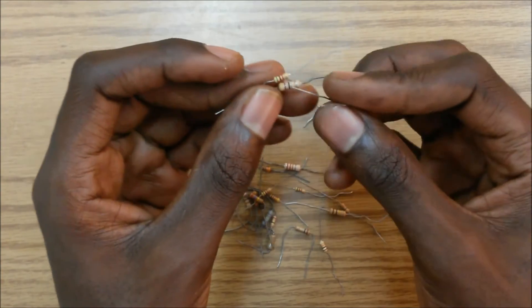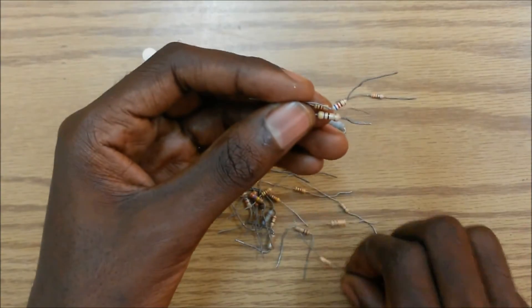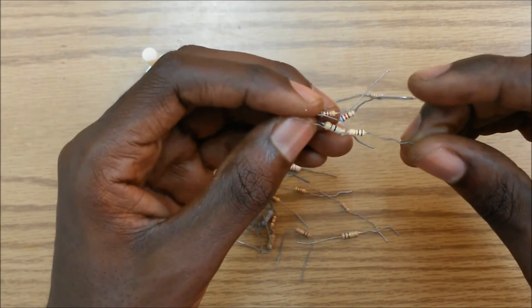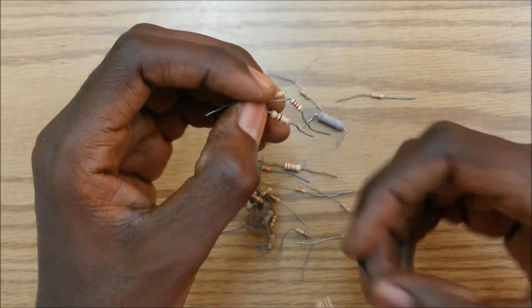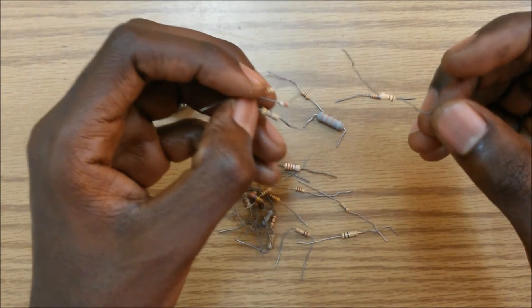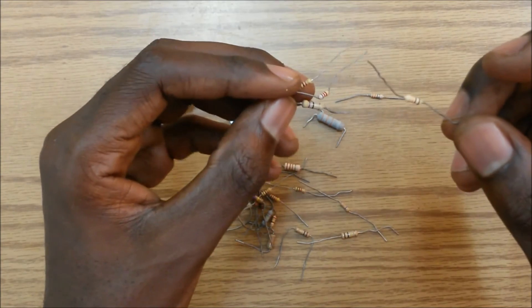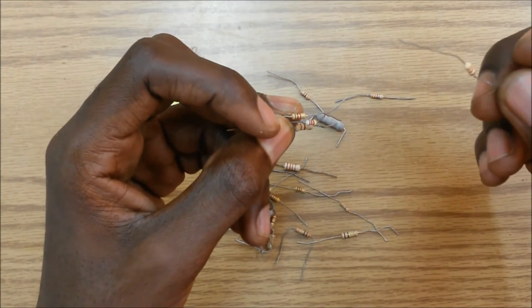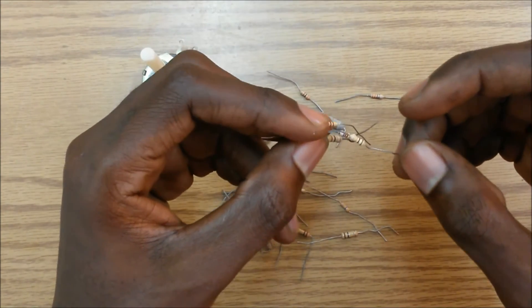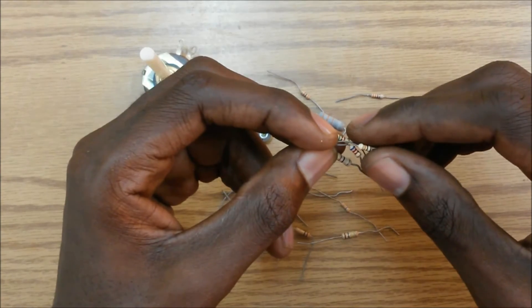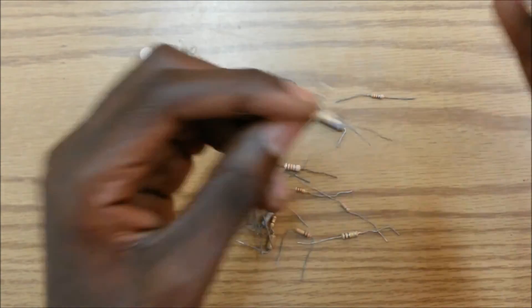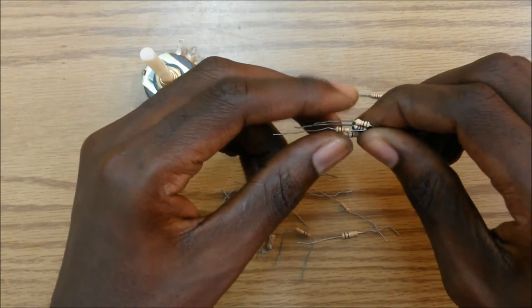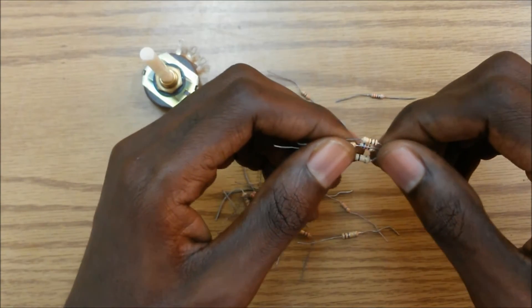So as we look at these resistors here, we realize that there are different color bands on the resistor. So the color band - the sequence of the color band - will indicate to us the value of the resistor. And that value of the resistor will determine the amount of current which is allowed to flow in the circuit. And that relationship between the current and the resistor is governed by Ohm's law, which says that V is equal to I times R.